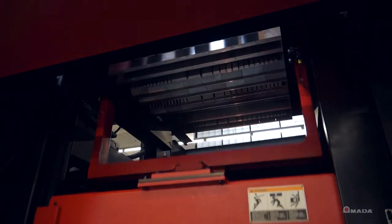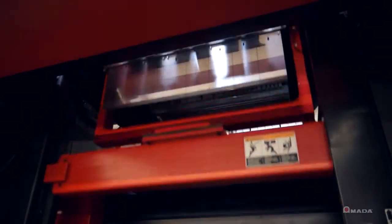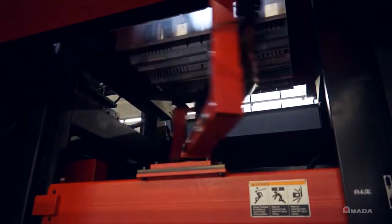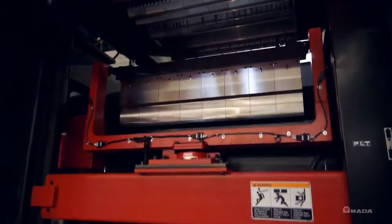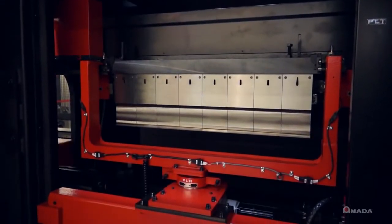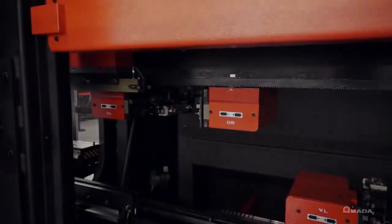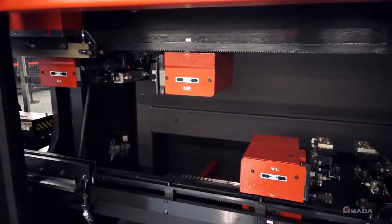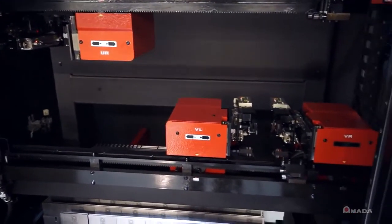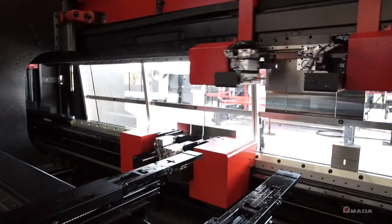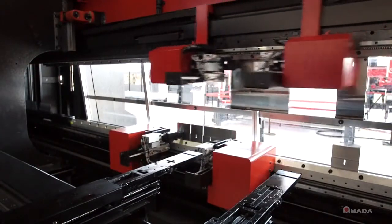For added versatility, the ATC has a punch reversal unit to reverse the punches and enhance the machine's forming capabilities to form parts completely in one tool setup. During tool loading, there are two punch units and two die units that work simultaneously to load and unload tools, making the process quick and efficient.